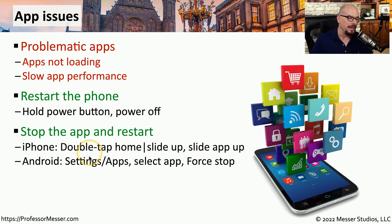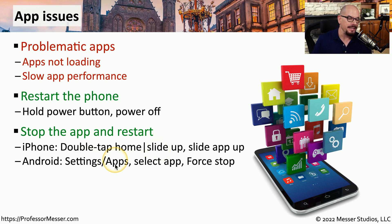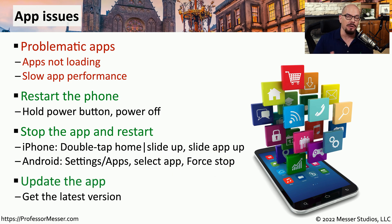If you're using an iPhone, you can either double tap the home button or you can slide up on the screen to present all of the apps that are currently running. You can then slide the app up that you would like to terminate, and then you can go back to your main screen and restart the app. On an Android device, you can go to Settings > Apps, select the app, and then choose Force Stop.